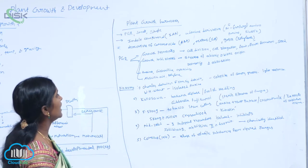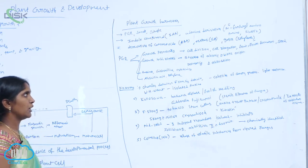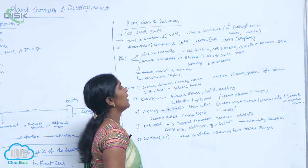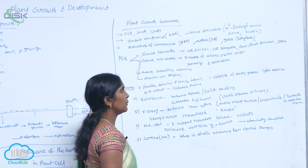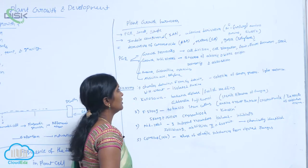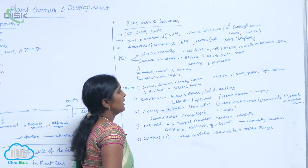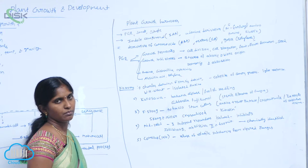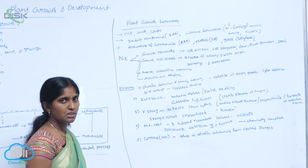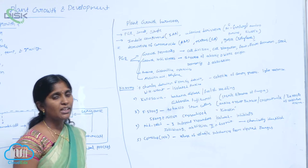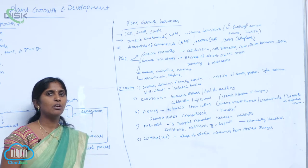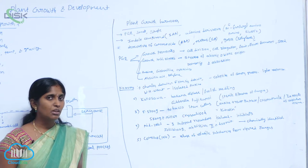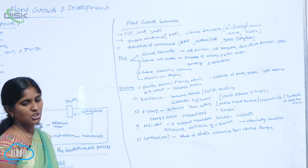Abscisic acid and ethylene both are considered as growth inhibitors. They are formed at stresses of abiotic and biotic origin, and they are involved in dormancy and abscission. What is dormancy? Delayed seed germination is called dormancy. Abscission.